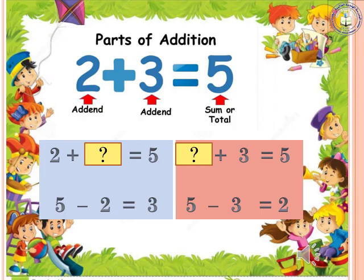In the second case, dash plus 3 equals 5 — the first number is missing. We can use subtraction: 5 minus 3 equals 2. So remember, we can use subtraction to find the missing number in addition, whether it is the first or second number.